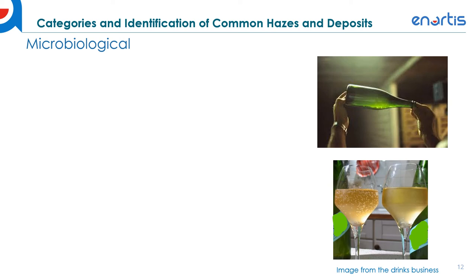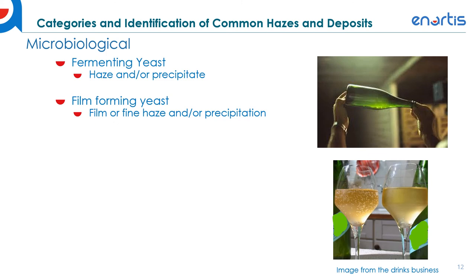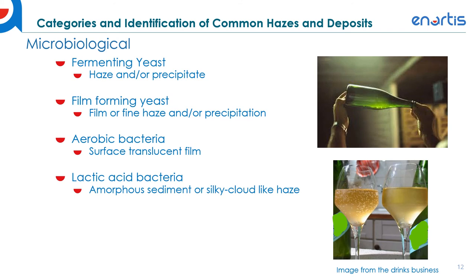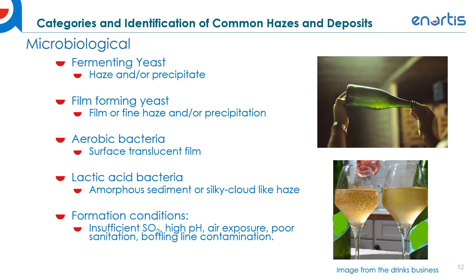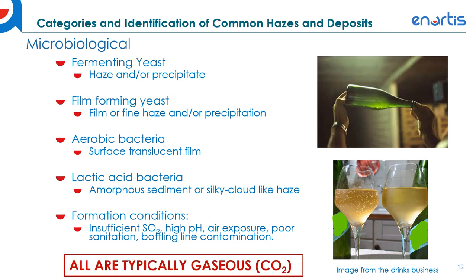Microbiological hazes can be formed from various microorganisms. Fermenting yeast often comes off as a haze or precipitate. Film-forming yeast can produce a film or fine haze and/or precipitation. Aerobic bacteria can create a surface translucent film. Lactic acid bacteria can produce amorphous sediment or a silky cloud-like haze. Formation conditions depend on growth conditions for these microorganisms — insufficient SO2, high pH, air exposure, poor sanitation, or bottling line contamination all contribute to microbial haze risks. Gas is almost always associated with the presence of microbial haze, so make sure to sanitize and stabilize your wine prior to bottling.